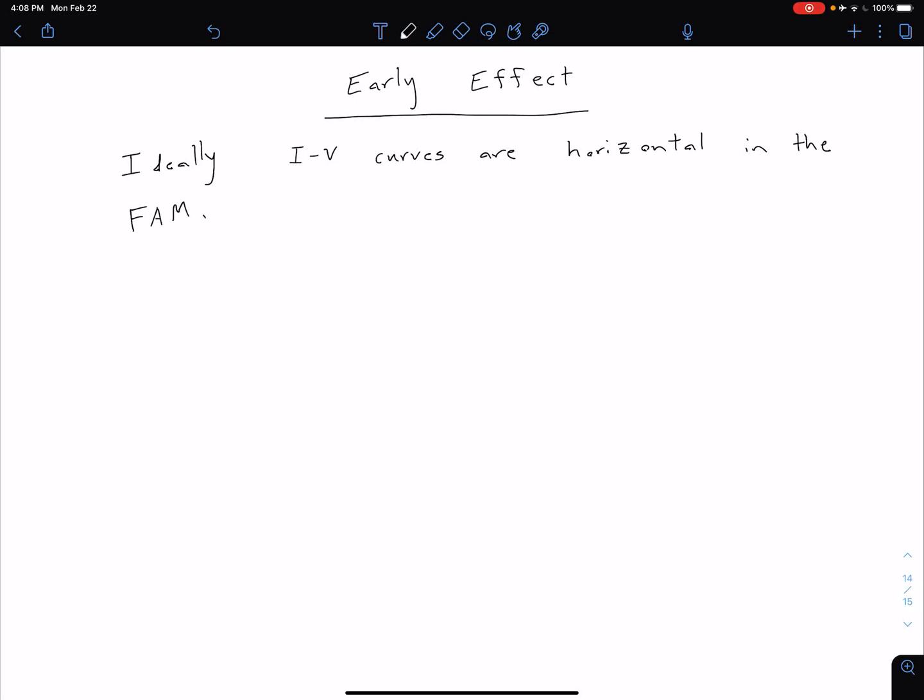Before we move on to look at our DC analysis of BJTs and eventually our DC biasing of our BJTs, I want to talk about one non-ideal effect which is called the early effect.